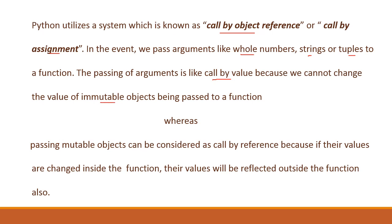Because the immutable objects, we cannot change the value when they are passed to a function. But in case of mutable objects, it is considered as call by reference because the value inside the function can also be reflected outside.